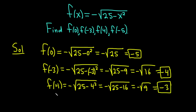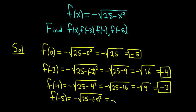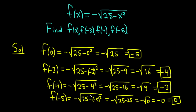And lastly, we have f of negative 5. This is equal to negative square root of 25 minus, in parentheses, negative 5 squared. When you square negative 5, you get positive 25. So this is equal to negative square root of 25 minus 25, which is just 0. So it's negative square root of 0. The square root of 0 is 0, so you get negative 0, which is just 0. So f of negative 5 is equal to 0.